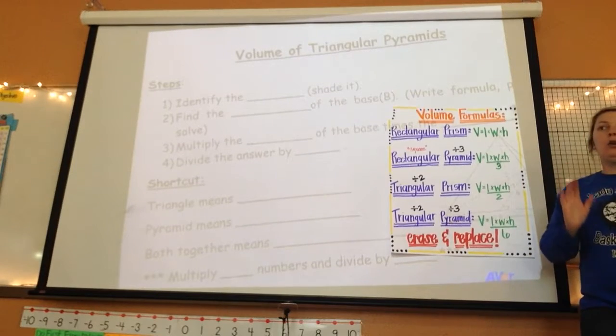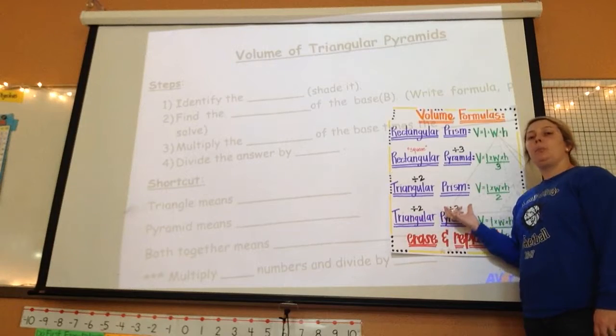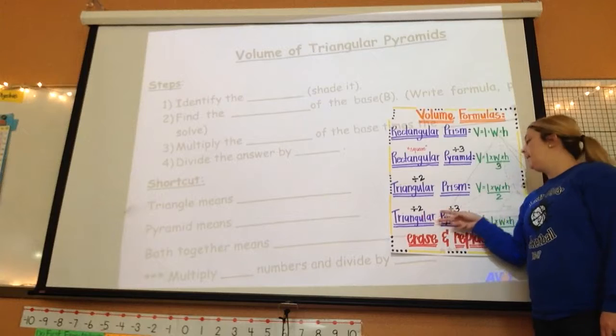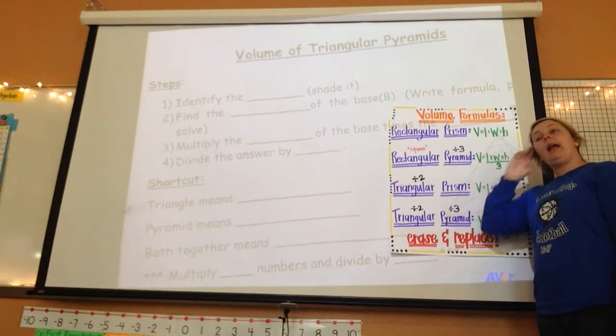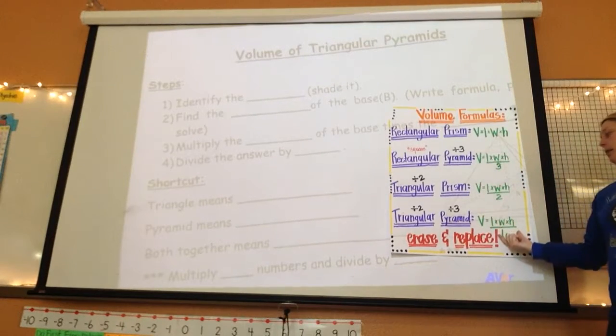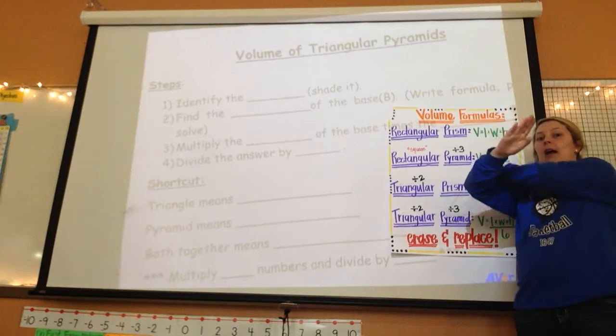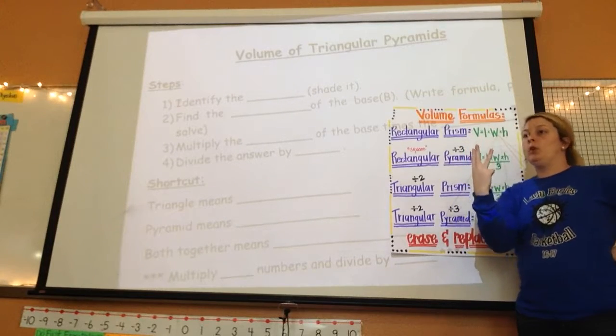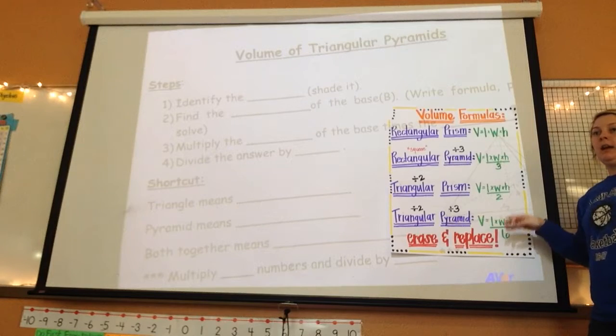Now today, we are moving in to triangular pyramid. Triangle means to divide by two. Pyramid means to divide by three. So if logically we could think about this for a second, what do you think I might be dividing by? Six. So I still cross out my slant. You're going to end up with how many numbers? Three. What am I going to do with them? Multiply. And divide by six.